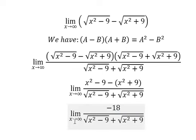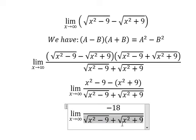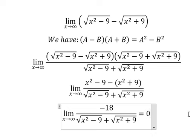When x approaches positive infinity, this will go to positive infinity. Negative 18 divided by positive infinity gives you zero, and this is the final answer.